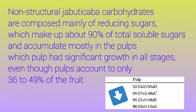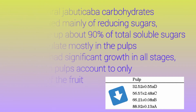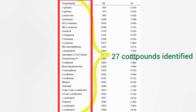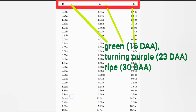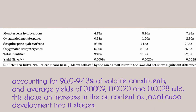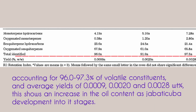These reducing sugars accumulate mostly in the pulp, which showed significant growth in all stages, even though the pulp accounts for only 36 to 49 percent of the fruit. For jabuticaba oil, 27 compounds were identified and analyzed in three stages, accounting for 96.0 to 97.3 percent of volatile constituents, with average yields of 0.0009, 0.0020, and 0.0028 wt percent.